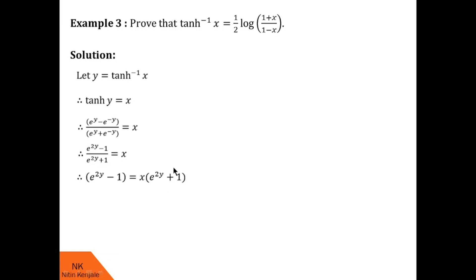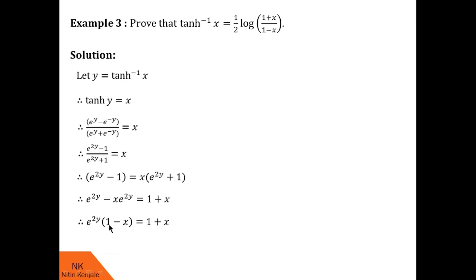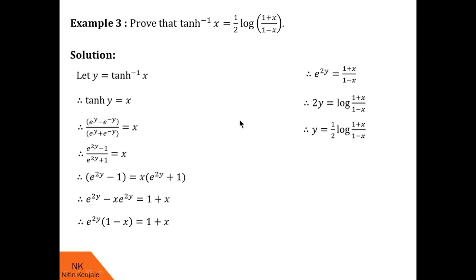Now let us simplify. Taking e^(2y) + 1 to the other side and opening the bracket and rearranging, we get e^(2y) − x · e^(2y) = 1 + x. Taking 1 − x to the other side, we get e^(2y) = (1 + x) / (1 − x). Therefore, 2y = log((1 + x) / (1 − x)), and so y = ½ · log((1 + x) / (1 − x)). Since y = tanh⁻¹(x), we say tanh⁻¹(x) = ½ · log((1 + x) / (1 − x)). Hence, this statement is proved.